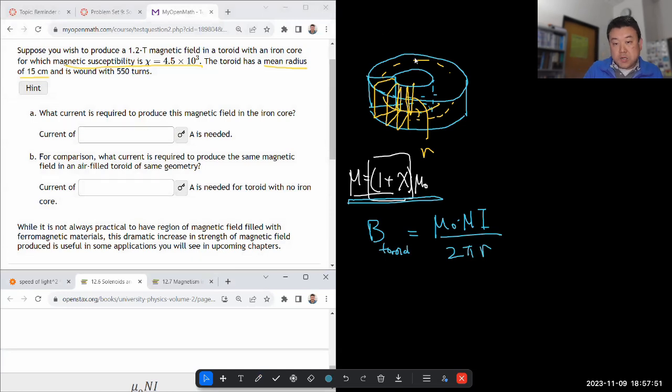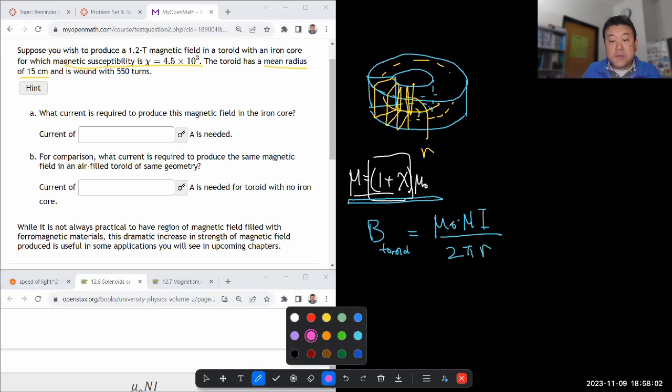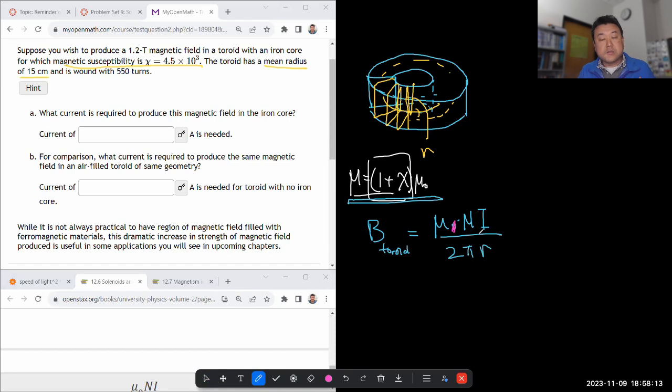So let's make the modification with this material. So basically what I'm going to do is I'm going to do a slight modification to this formula, where it has permeability of free space. I'm going to use permeability of material, permeability of the iron core. And the permeability of that iron core would be given by this. So with this modification, if I'm writing it back in terms of the permeability of free space, then it would look like 1 plus the susceptibility times permeability of free space times n times i divided by 2 pi r. And I think we are given everything.